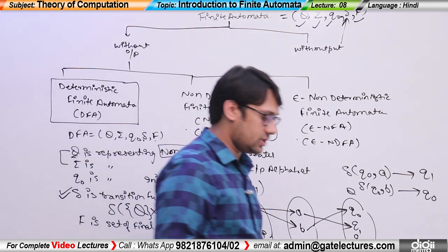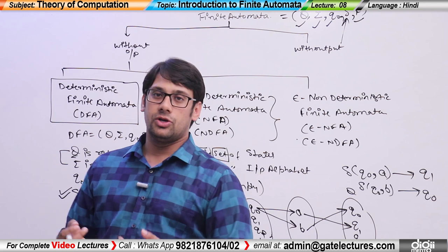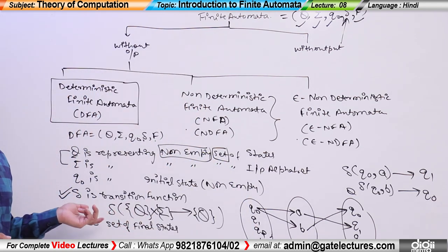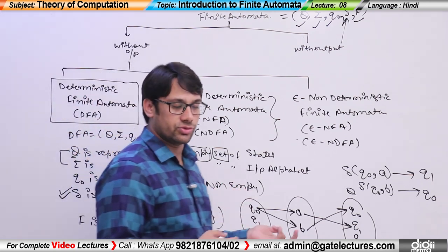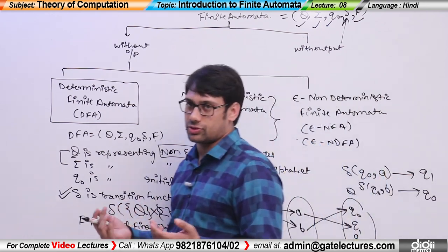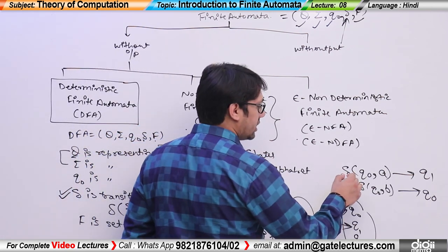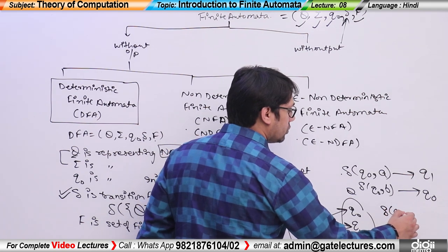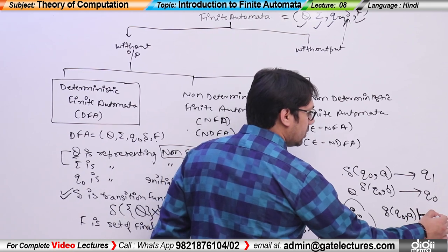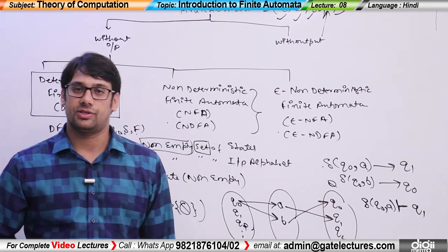Now, what I will do is take an example. With that example, I will define what this transition function actually is and how we use it. Also, the representation of the transition function may vary in different books, since these are mathematical functions. The notation delta(q0, a) gives you a symbol that tells you which state you are going to. I will also explain what that symbol is.